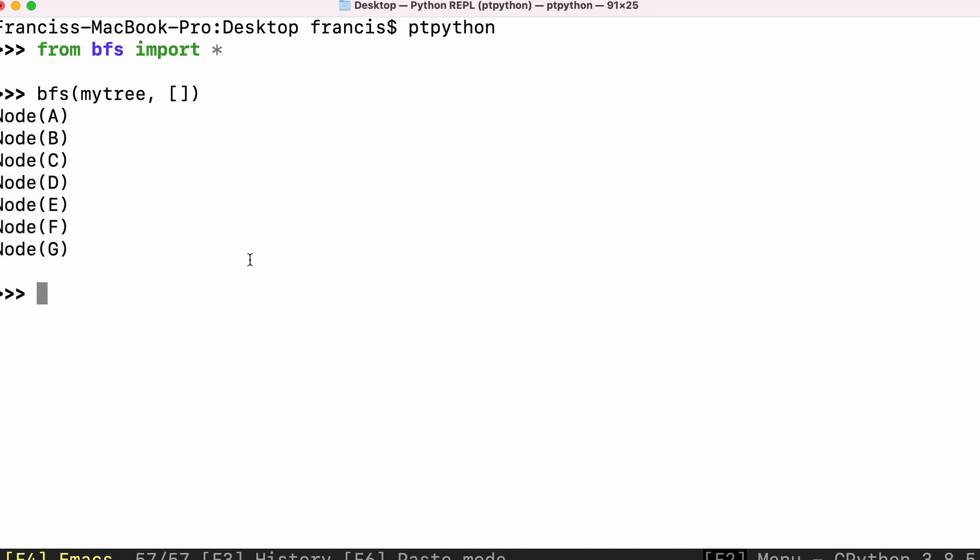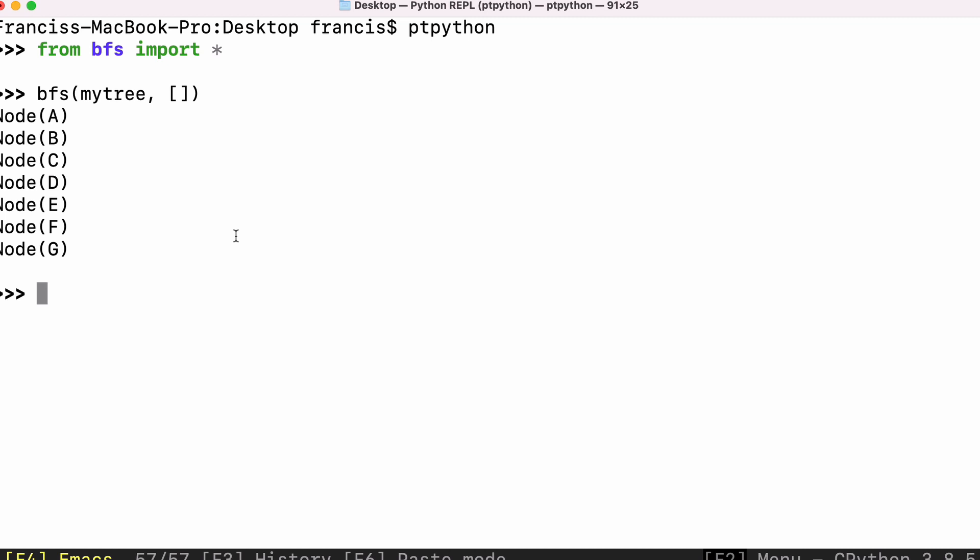That's exactly what we thought was going to happen because if we look at our tree, you can see if we go horizontally from left to right, the first one is A, then B and then C, and then D, E, F and G. And that's exactly the order that they were printed out in our code.